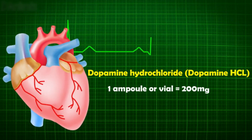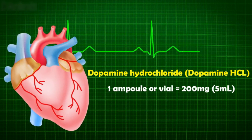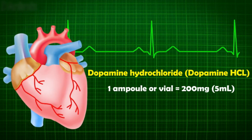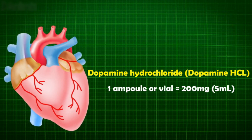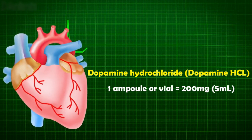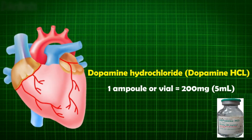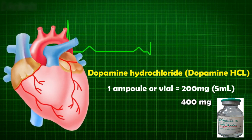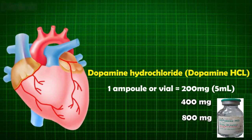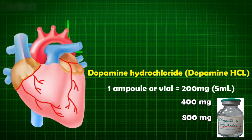The common drug dose availability is 200 milligrams in 5 milliliters ampoule or vial. Other doses like 400 milligrams and 800 milligrams are also used in clinical practice.